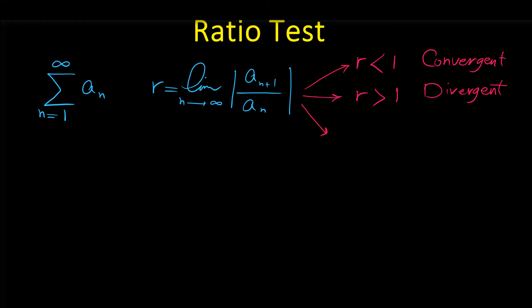But when r equals one, this test is inconclusive, which means we cannot conclude anything about the convergence or divergence of the series — the series may converge or may diverge.